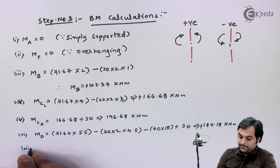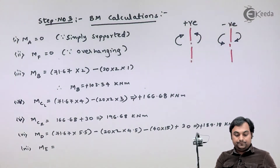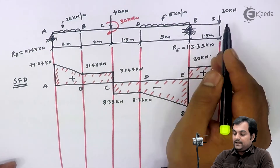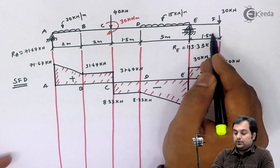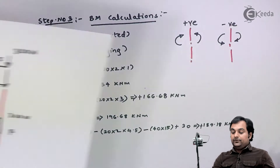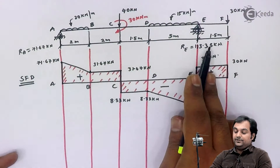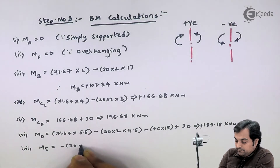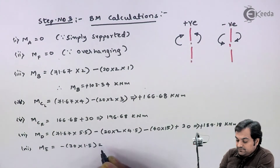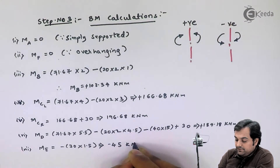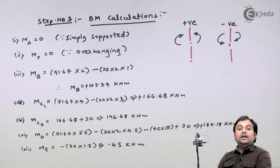Finally, the moment at E: taking the section at E, the 30 kN force to the right is producing a clockwise moment. A clockwise moment to the right is taken as negative, so we have minus 30 into 1.5, which gives minus 45 kN·m.